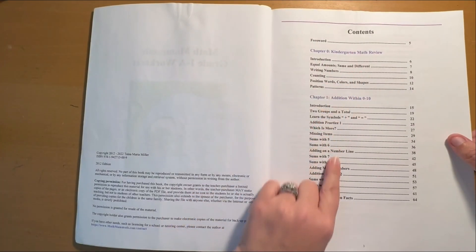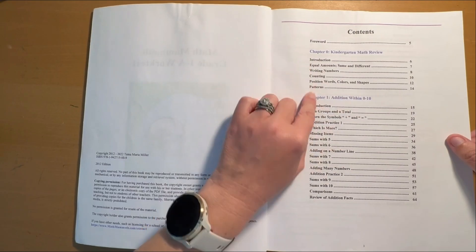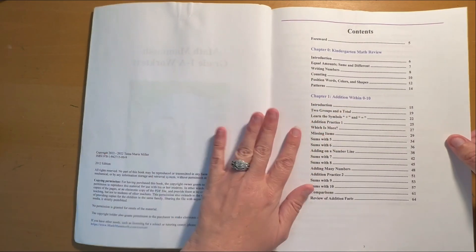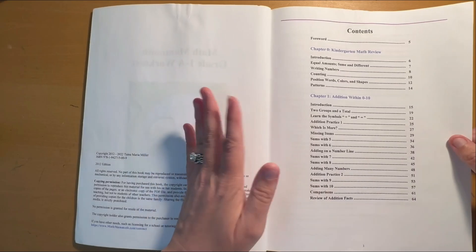At the beginning, they're going to lay out everything that's in the book. So it starts with some kindergarten math review, which is going to be colors, shapes, patterns, writing numbers, that kind of stuff.